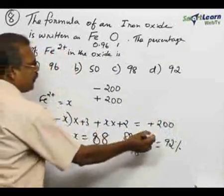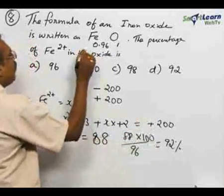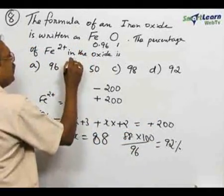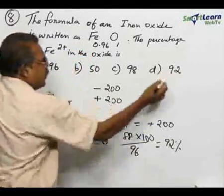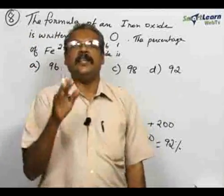So Fe 2+ must be 92 percent and Fe 3+ 8 percent. In the problem, the Fe 2+ percentage is asked, that is given as 92. So go for the option D) 92, that must be the correct one. Option is D.